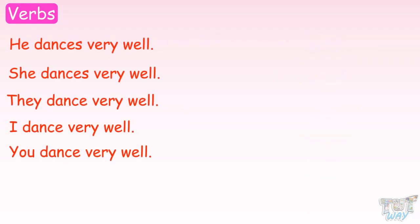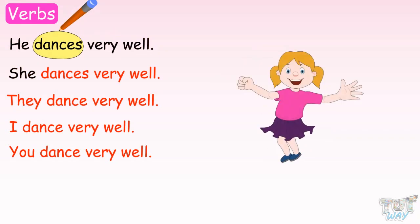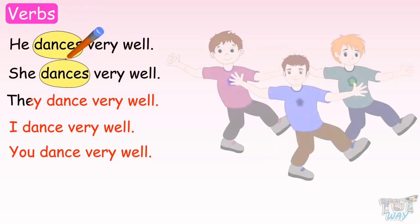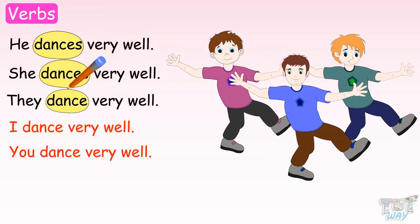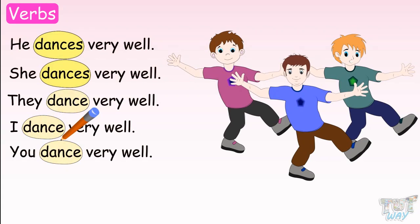Now, here we have some more sentences. Circle the verbs and observe them. He dances very well. She dances very well. They dance very well. I dance very well. You dance very well. So kids, what do you observe here? The verb in these sentences is either dance or dances. So we have two forms of the same verb: dance or dances.